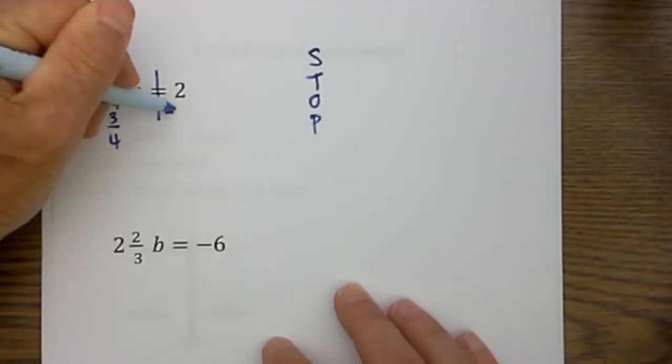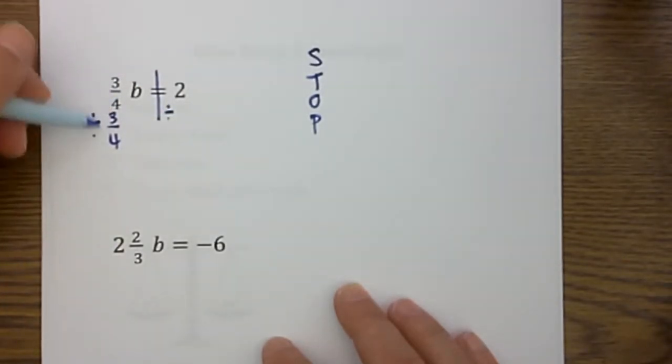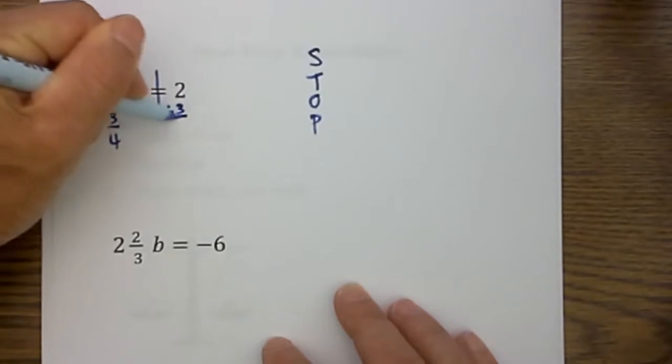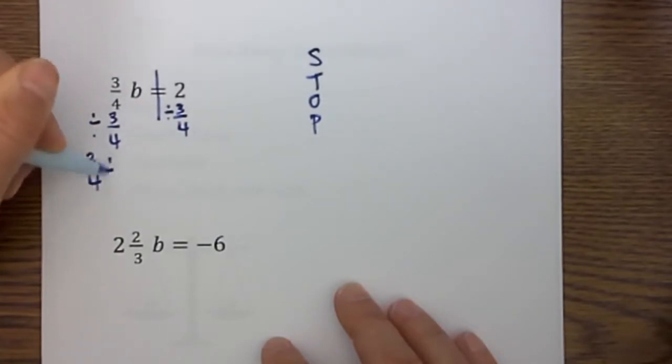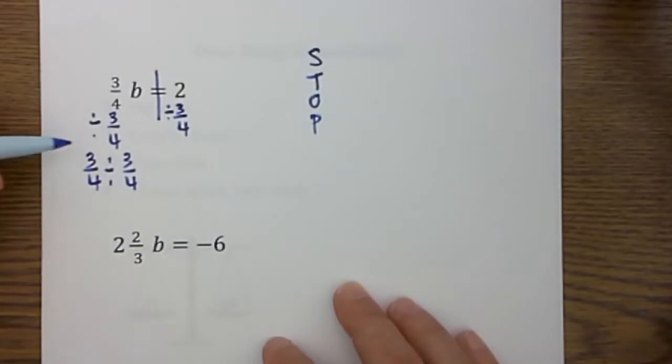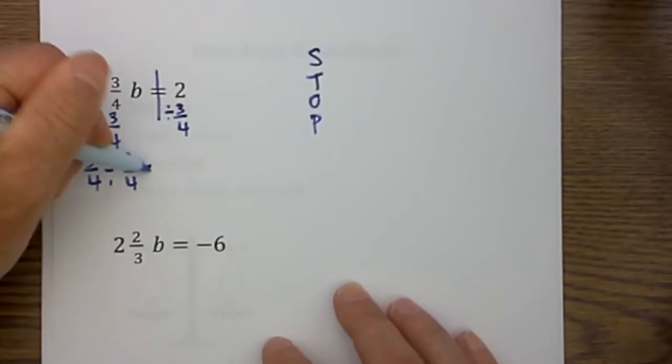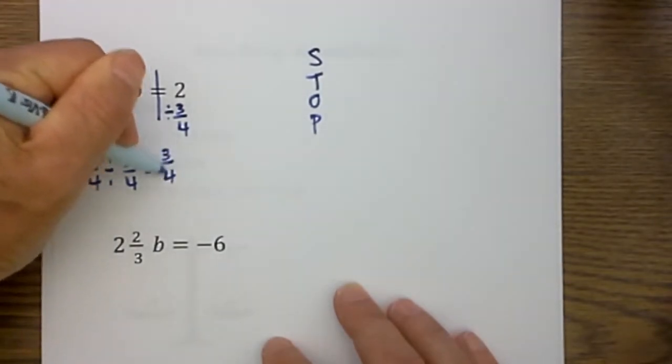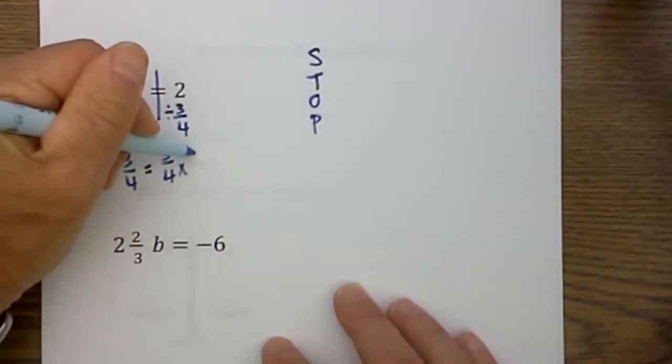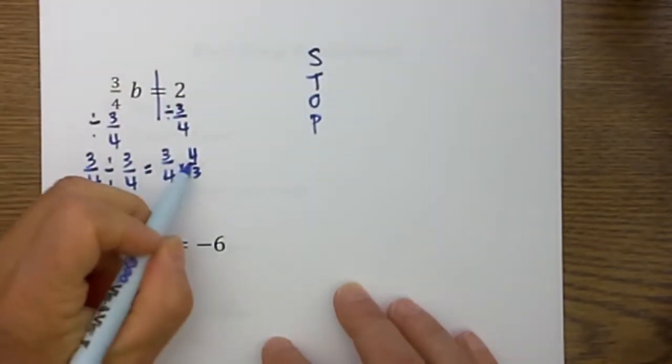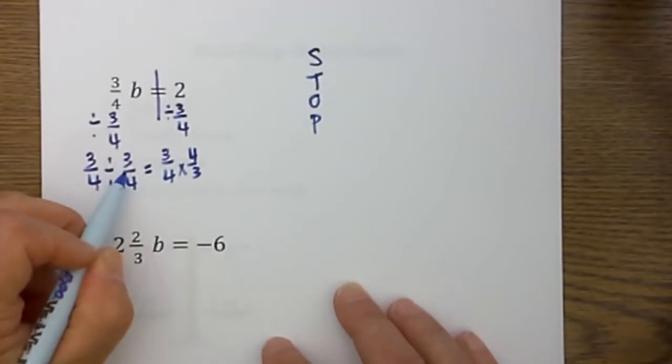So I have 2 divided by 3/4 and 3/4 divided by 3/4. Whenever you divide two fractions, I have 3/4 divided by 3/4. What I do is because of the rules with fractions I will keep, change and flip. So this becomes 3/4 times, change the sign to multiplication and then I flip. And so in reality all I am doing is multiplying by its reciprocal.